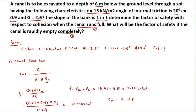Substituting all values: FOS = c / (γ_dash × h × Sn) = 15 / (9.10 × 6 × 0.083). Solving this, we get FOS equals 3.31. This is the factor of safety when the canal is running full — the answer to the first question.